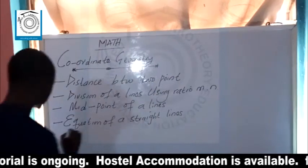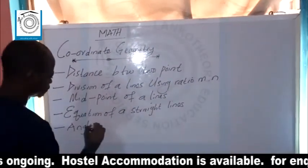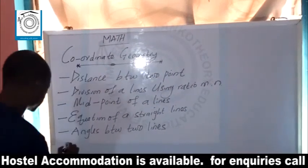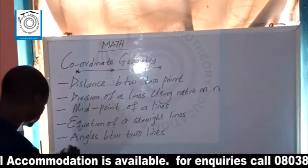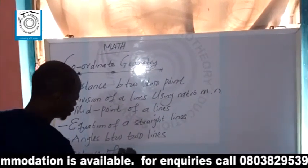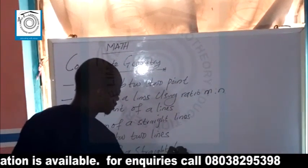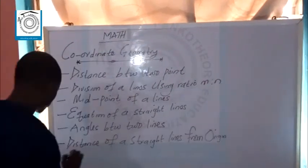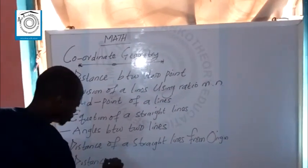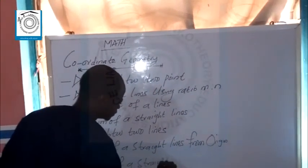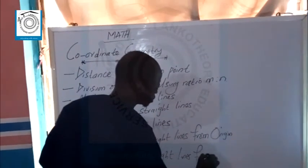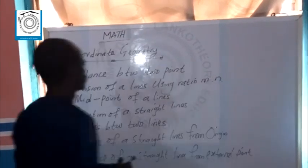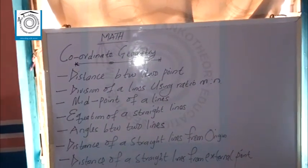Number five: we have the angle between two lines. Number six: after the angle between two lines, we have the distance of a straight line from the origin. Number seven: we have the distance of a straight line from external points. Those are the topics that we must be able to identify the difference between.